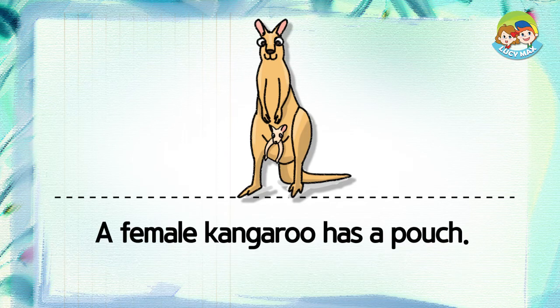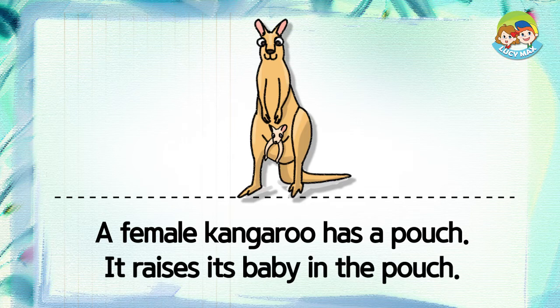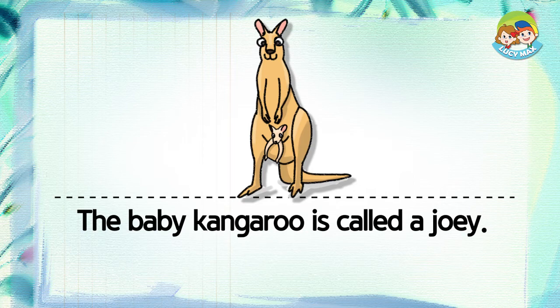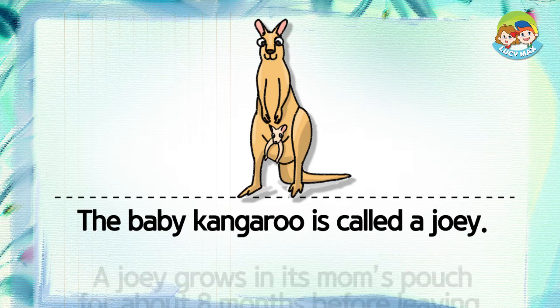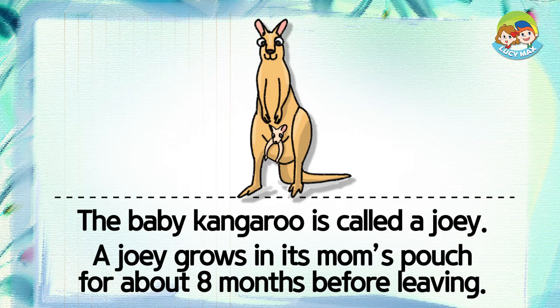A female kangaroo has a pouch. It raises its baby in the pouch. The baby kangaroo is called a joey. A joey grows in its mom's pouch for about eight months before leaving.